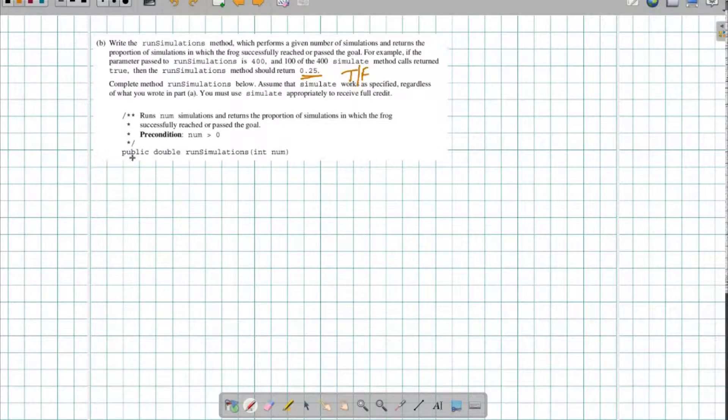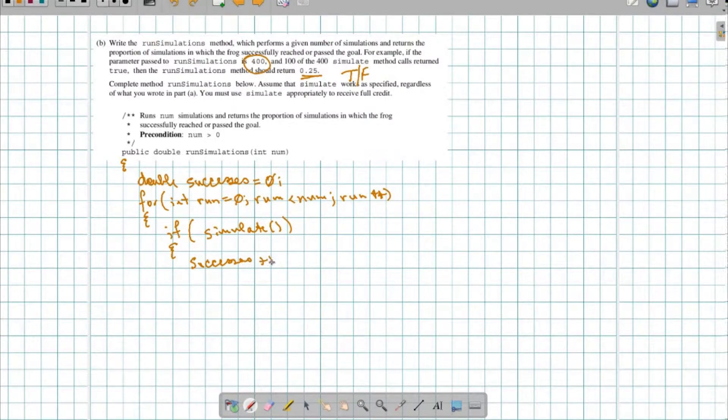So, I'm going to have to make sure that I go through this a certain number of times. NUM number of times. And I'm going to start off by declaring a double called successes. And I'm going to start that at 0. And then I'm going to go through and I'm going to run for each of these things. So int run is 0, run is less than num, run plus plus. This is keeping track of how many of these runs I've done. This is the number of simulations that I've run so far. And then if simulate, keep in mind that simulate is a Boolean function. It's going to return either a true or false. If I get a true out of it, then I want to successes plus plus.